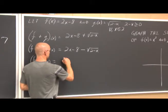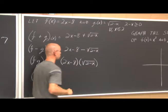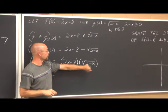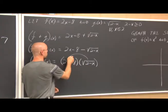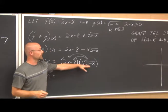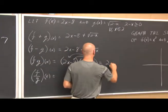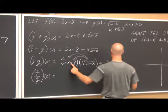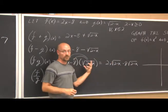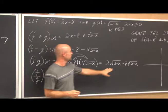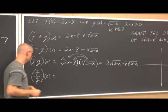Multiplying these functions: f times g of x is (2x minus 8) times the square root of (2 minus x). The square root term is a single radical term, so we distribute: 2x times the square root of (2 minus x) minus 8 times the square root of (2 minus x). Simplified through distribution, and we still have 2 minus x under the radical, so the domain remains x ≤ 2.